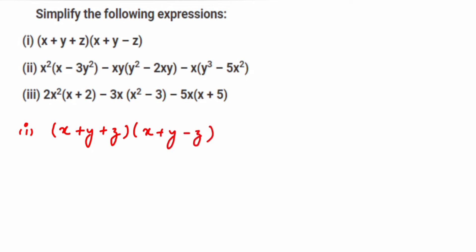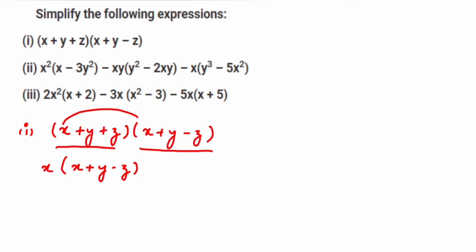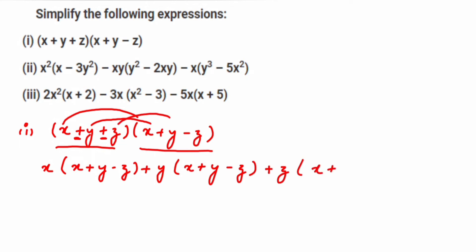When you are multiplying two brackets — a trinomial with a trinomial — you have to multiply each term in the first bracket with the entire second bracket. This is the distributive law. So multiply x with the entire second bracket: x into (x + y − z). Then plus, multiply y with all the terms in the second bracket: y into (x + y − z). Then plus, multiply z with the whole thing: z into (x + y − z).